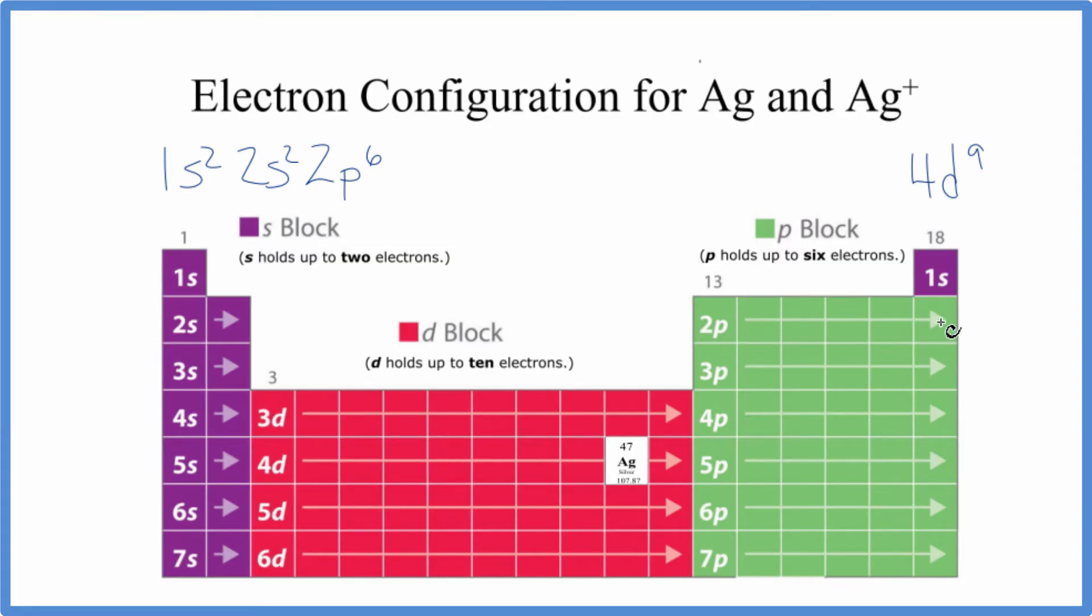Let's go on. We had 2p⁶, 3s², 3p⁶, 4s². Then we go from the 4s to the 3d. D can hold up to 10, so we'll put 3d¹⁰.